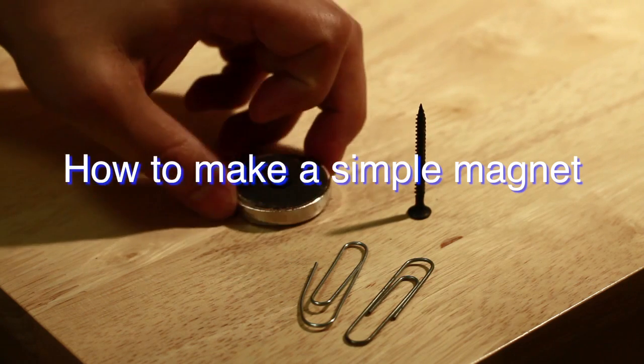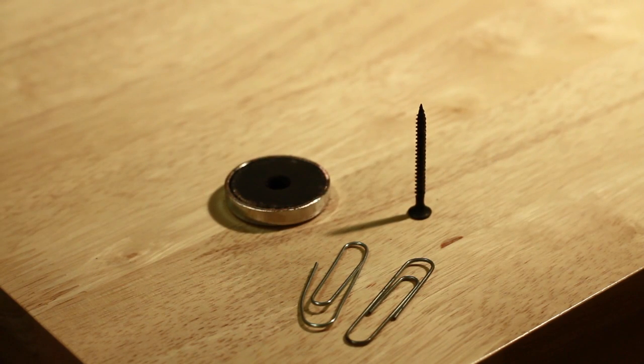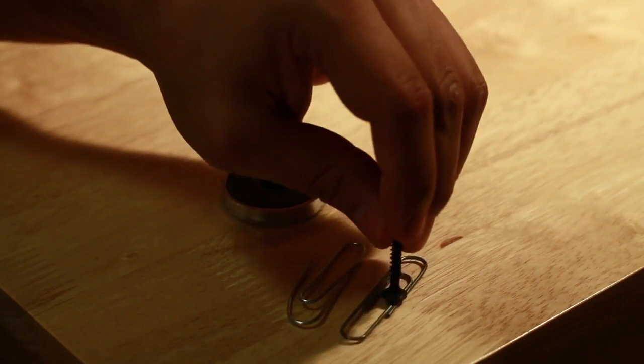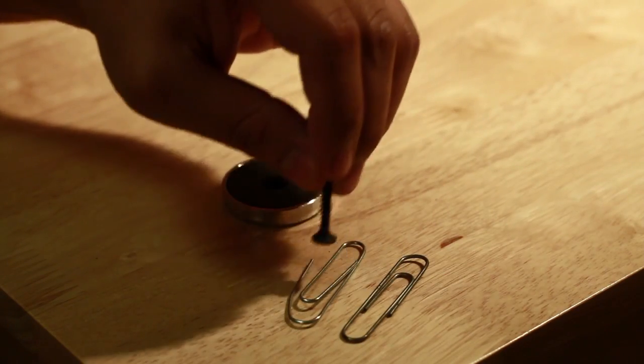A simple representation of what we've learned so far about electrons is turning an average screw into a magnet. We will need an iron screw, a common magnet, and a couple of paper clips for demonstration. Notice that the screw doesn't initially display any magnetic properties.